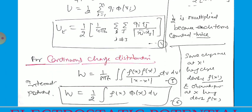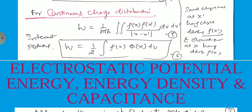Now, if the charge is not in discrete form but in continuous form, like a volume distribution: if there are charges ρ(X') producing a potential at point X, then W equals (1/8πε₀) times the double volume integration of ρ(X) ρ(X') divided by |X − X'|. And finally, we can write W equal to (1/2) times the integral of ρ(X) φ(X) dV.